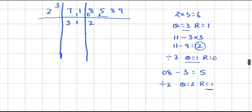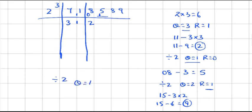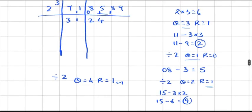Subtract 15 minus 3×2=6: 15 minus 6 gives 9. Now divide 9 by 2: 2×4=8, so quotient is 4 and remainder is 1. Carry the remainder 1 to the left of digit 8 in the remainder portion, making it 18.